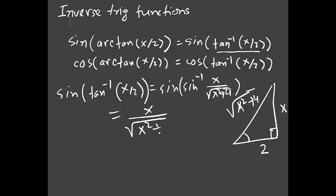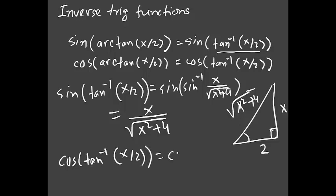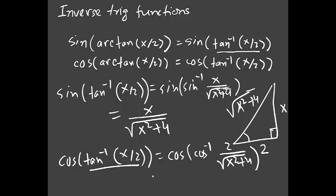The same way, for cosine of tan inverse(x/2), keep the cosine and convert tan inverse to cosine inverse. Cosine inverse is adjacent over hypotenuse, so it's 2 over √(x² + 4). Cosine and cosine inverse cancel, so the answer is 2 over √(x² + 4).